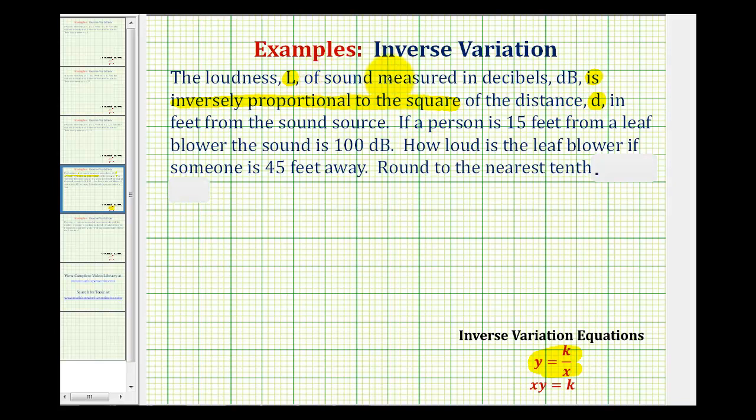So because it says L is, that means our equation will start with L equals. And then again, because it's inversely proportional to the square of d, it won't just be k divided by d, it'll be k divided by d squared.